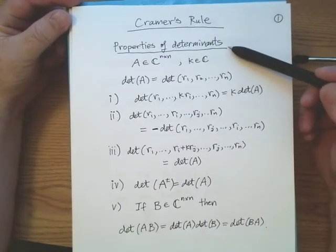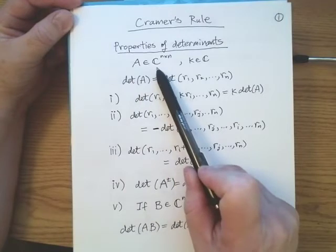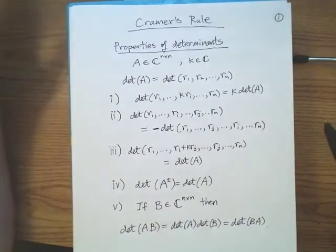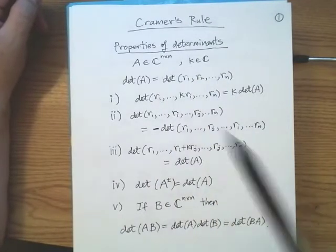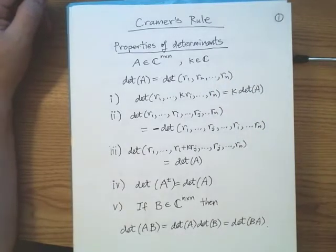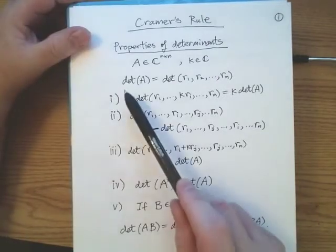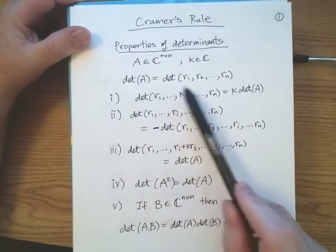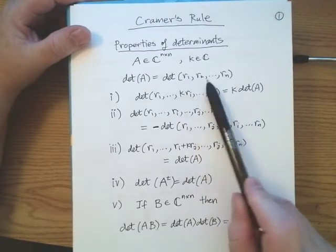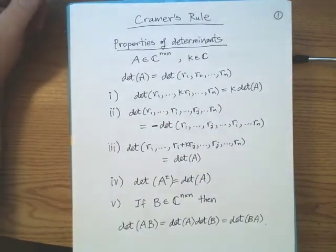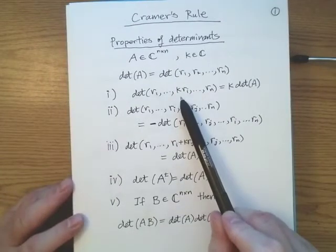The first thing I'm going to discuss is properties of determinants you should already know. I'm going to assume that A is an n×n matrix with either real or complex coefficients, and c is a scalar that's an element of the complex numbers or the real numbers respectively. My notation: det(A) is going to be written as the determinant of row one, row two, down to row n — these are the n rows of matrix A.